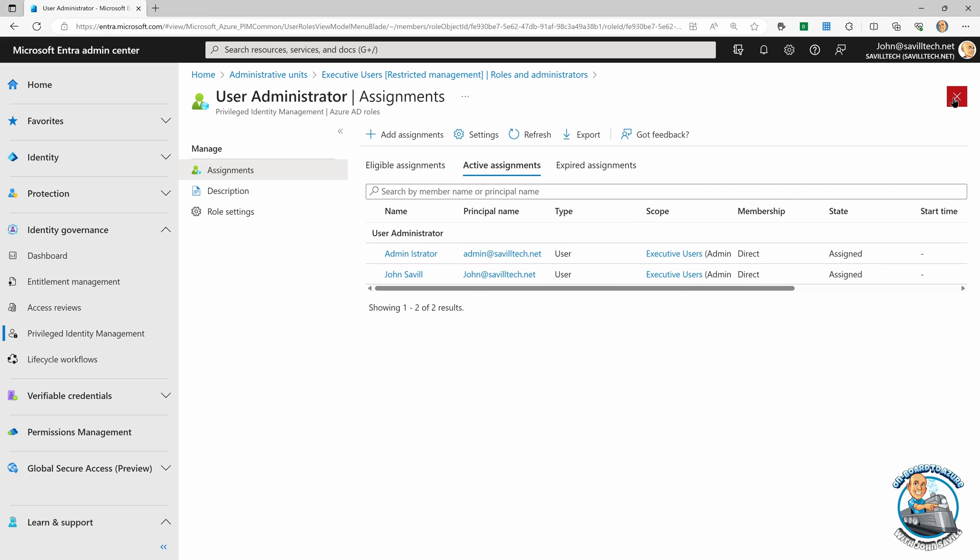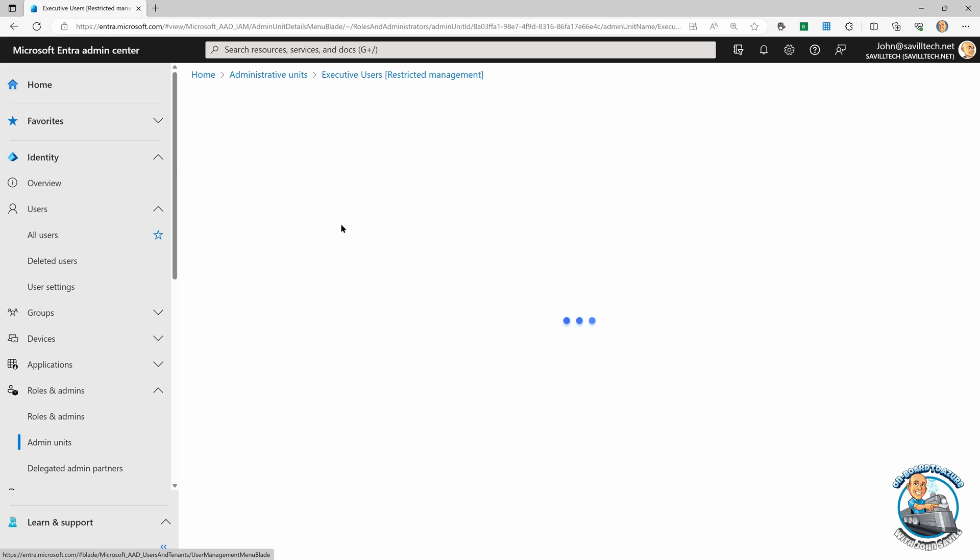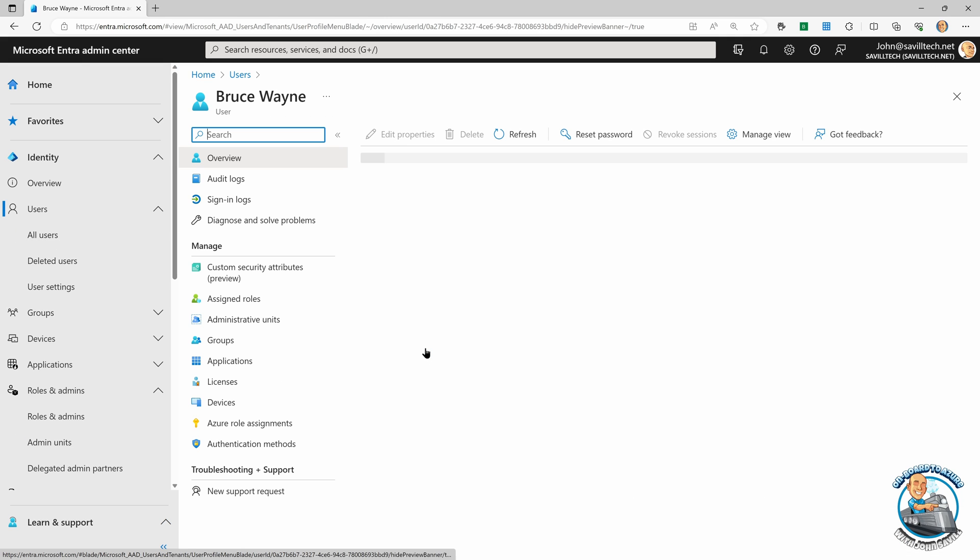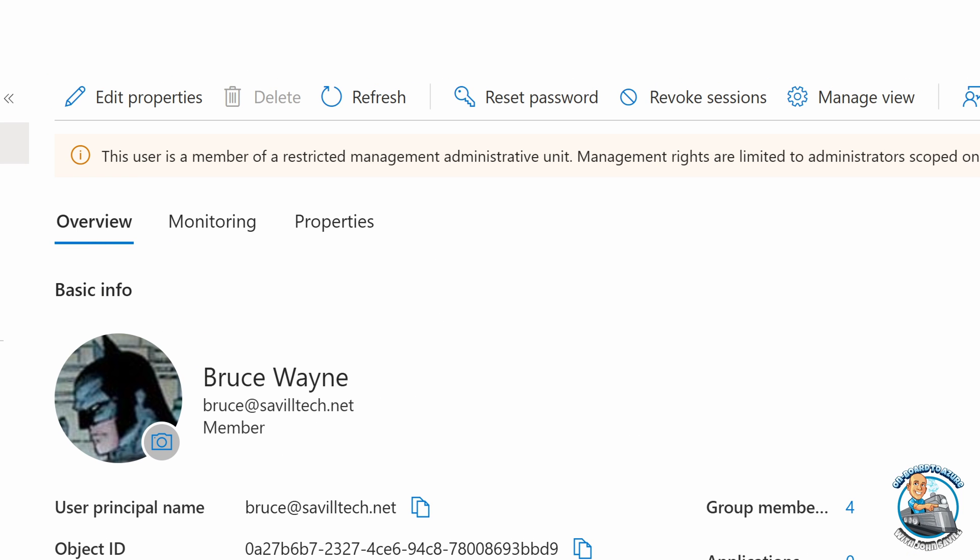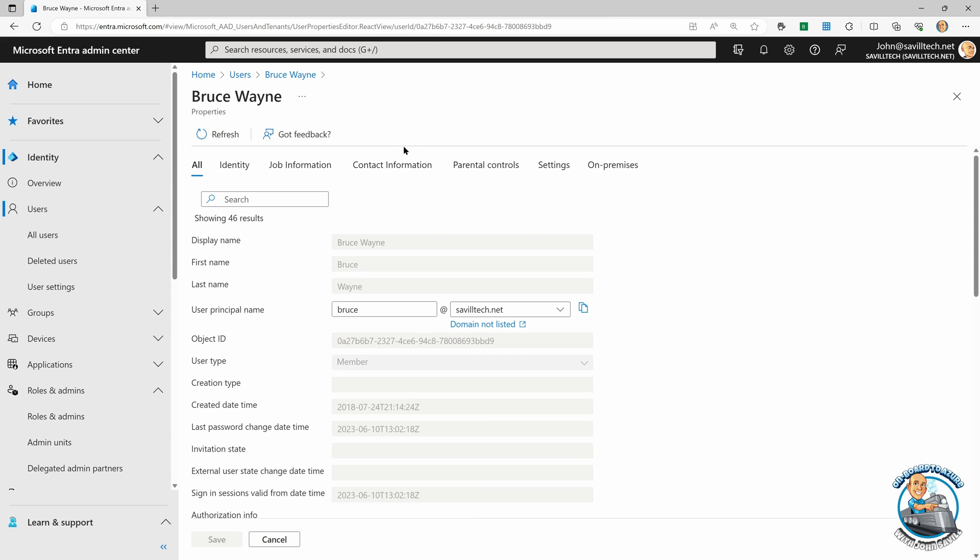Now, just to demonstrate this. So remember, I have that permission. So if I go and look at all my users, and I look at Bruce Wayne, now it's warning me, hey, this user is a member of a restricted management administrative unit, rights are limited to particular administrators scoped on their AU. But because I am John, and I'm one of those, well, I can go and edit the various properties. I have that permission to change certain attributes.